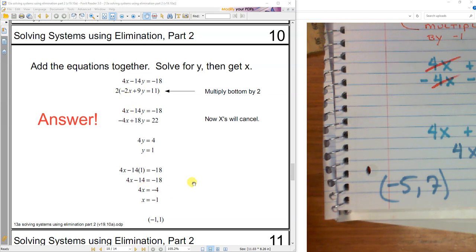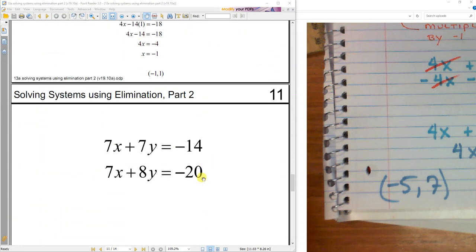Multiply it by 2. And here's the solution. Let's look at this one. What would you do? Would you multiply the top or bottom? And what would you multiply it by? Oh man, those x's. Those x's want to cancel out. If I multiply the top by negative 1, I'd have negative 7x minus 7y equals 14. This equation is gone. And now I'm ready to solve it. That's today's lesson.